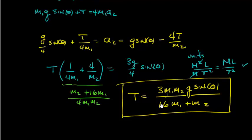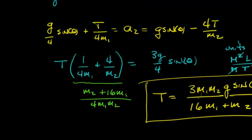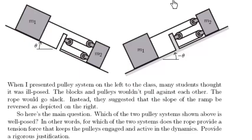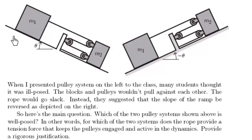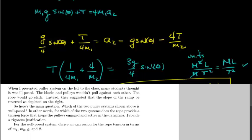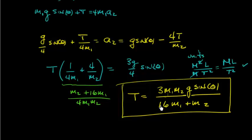Now that we have the answer, let's go back to the original question: we had two system configurations, and we wanted to know which one is well-posed — for which system do the ropes remain taut rather than going slack. We need to check whether the tension we found is positive, negative, or zero.